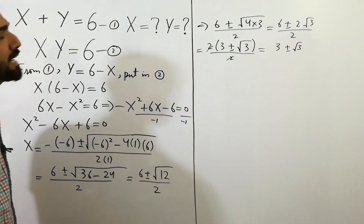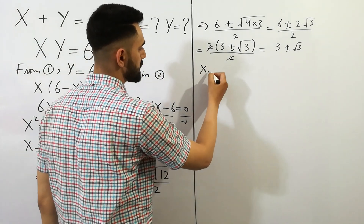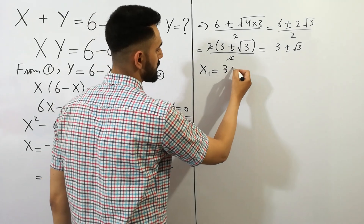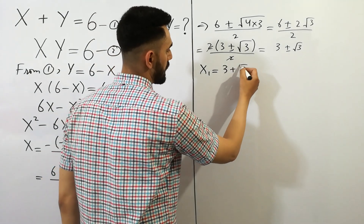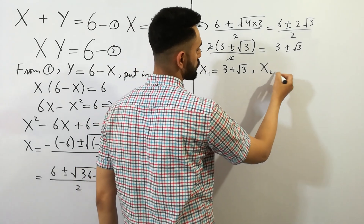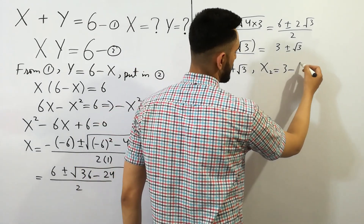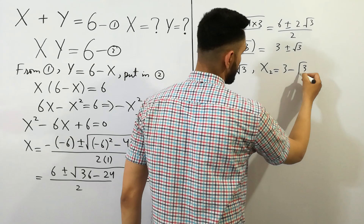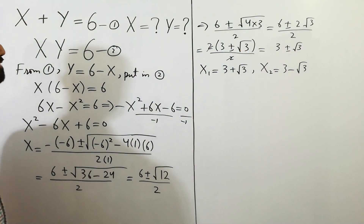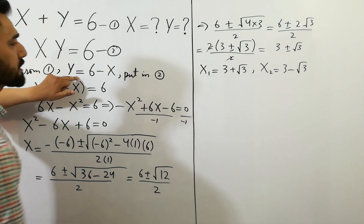This simplifies to 3 plus or minus square root of 3. So we have x1 is equal to 3 plus square root of 3, and x2 is equal to 3 minus square root of 3.